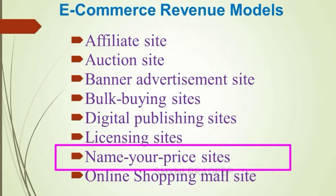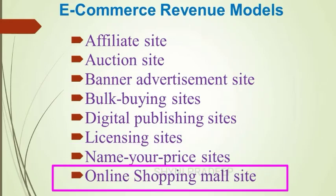Next are name-your-price sites, which are like normal retail sites except the buyer negotiates with the retailer for a particular product or service — for example, hotel websites. Next are online shopping mall sites, which allow multiple e-commerce traders to assemble together on a single website. These sellers would be related to each other.